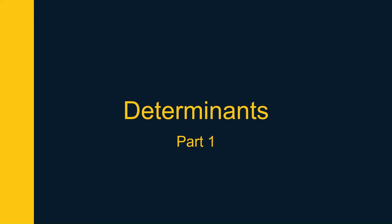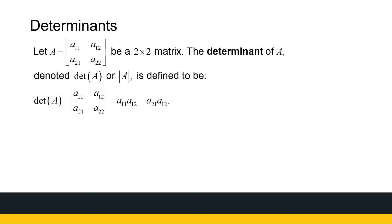Let's start with a 2 by 2 matrix. To calculate the determinant of a 2 by 2 matrix, it's a11 times a22 minus a21 times a12. It's a simple calculation that gives a real number. The notation we use is det(A), or the determinant of A written with vertical lines.